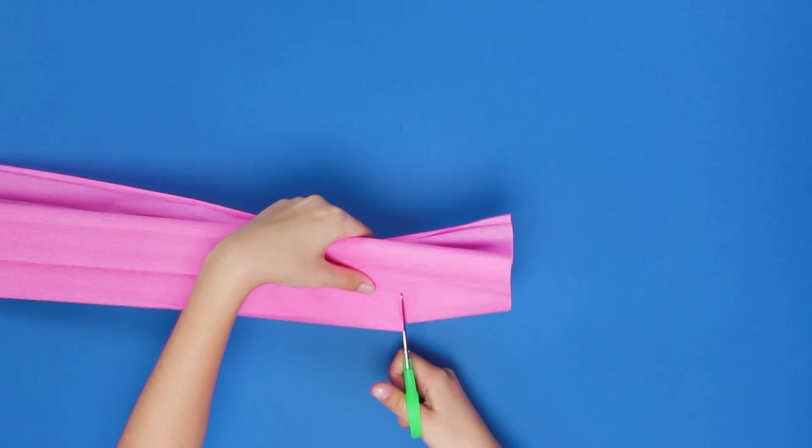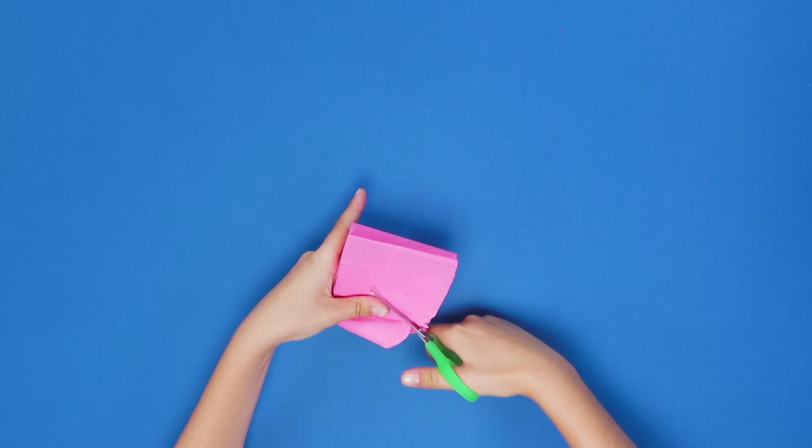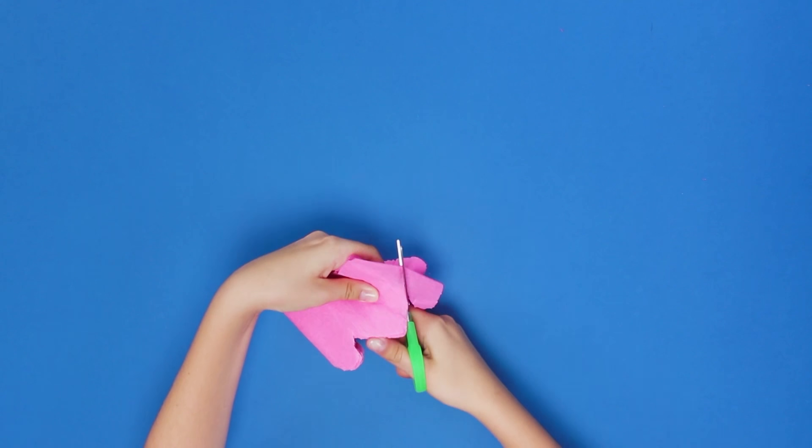Take the crepe paper and cut a small rectangle off the end. Next, cut three semi-circle shapes along one side.